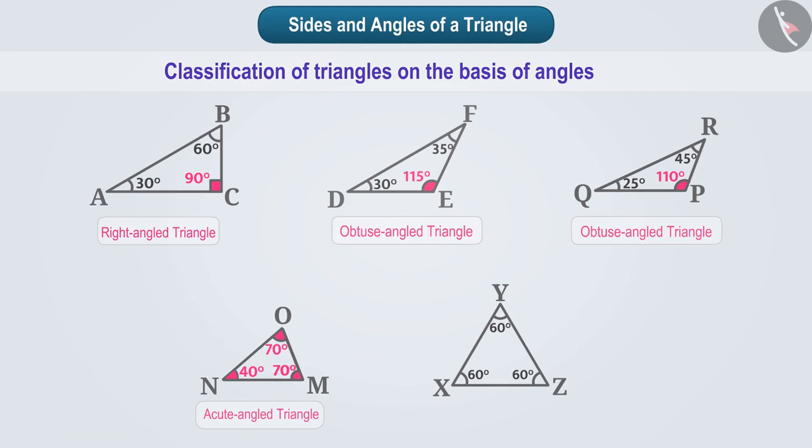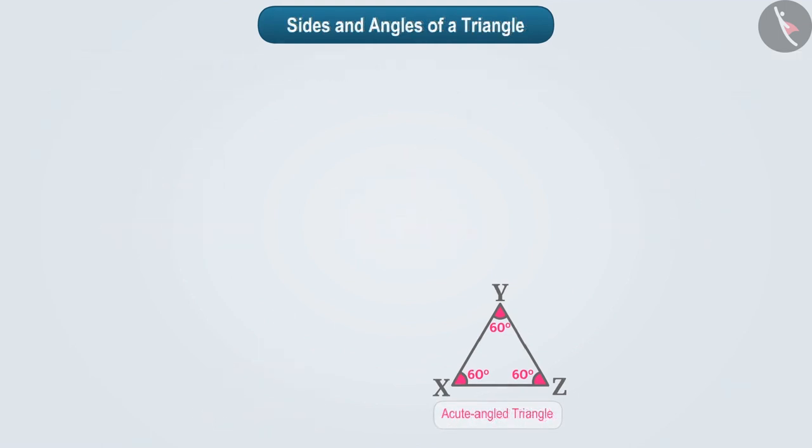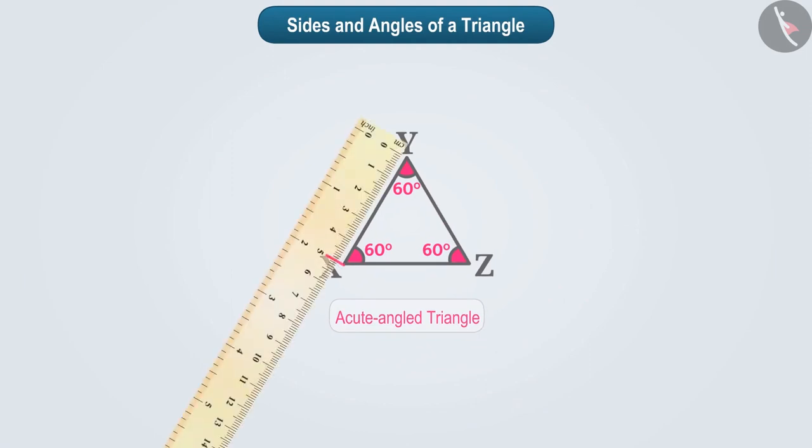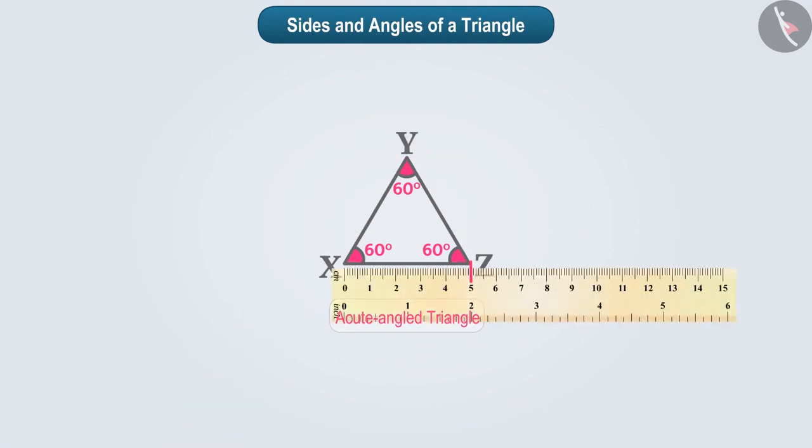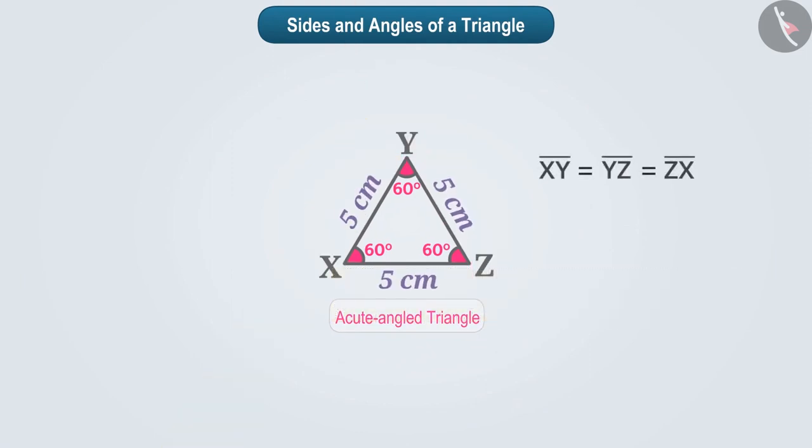If we talk of triangle XYZ, then all its angles are 60 degrees. That is, it is an acute angle triangle. If we measure its sides, we will see that its three sides are equal. This shows us that it is an equilateral triangle. We can say that in an equilateral triangle, every angle is 60 degrees.